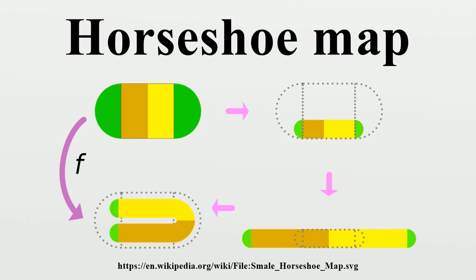The vertical strips can be named according to the sequence of visits to strip a or strip b. For example, the set ab in v3 consists of the points from a that will all land in b in one iteration and remain in b in the iteration after that. Working backwards from that trajectory determines a small region — the set ab within v3. The horizontal strips are named from their vertical strip pre-images. In this notation, the intersection of v2 and h2 consists of 16 squares, one of which is λ(ab,bb) equals F^2(b,b). All the points in λ(ab,bb) are in b and will continue to be in b for at least one more iteration. Their previous trajectory before landing in b,b was a followed by b.